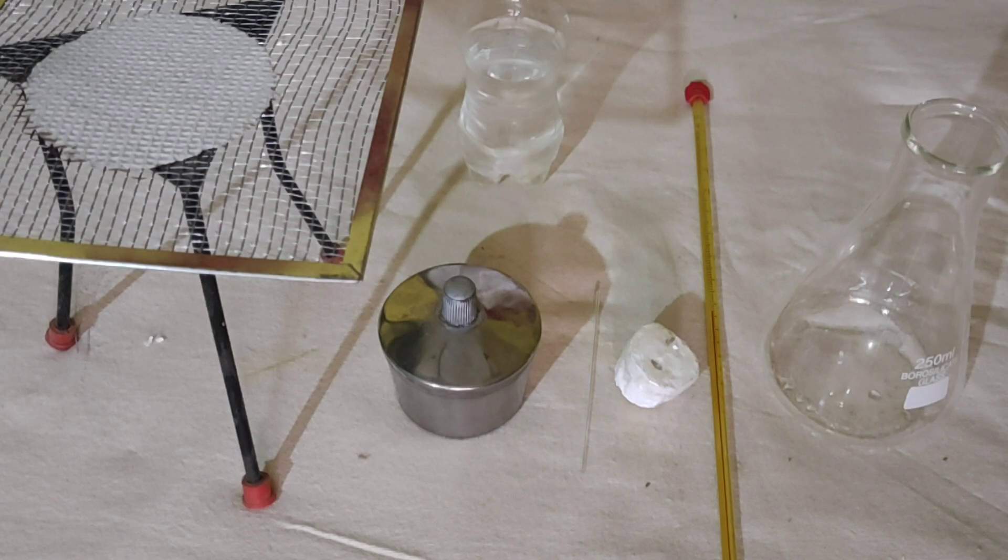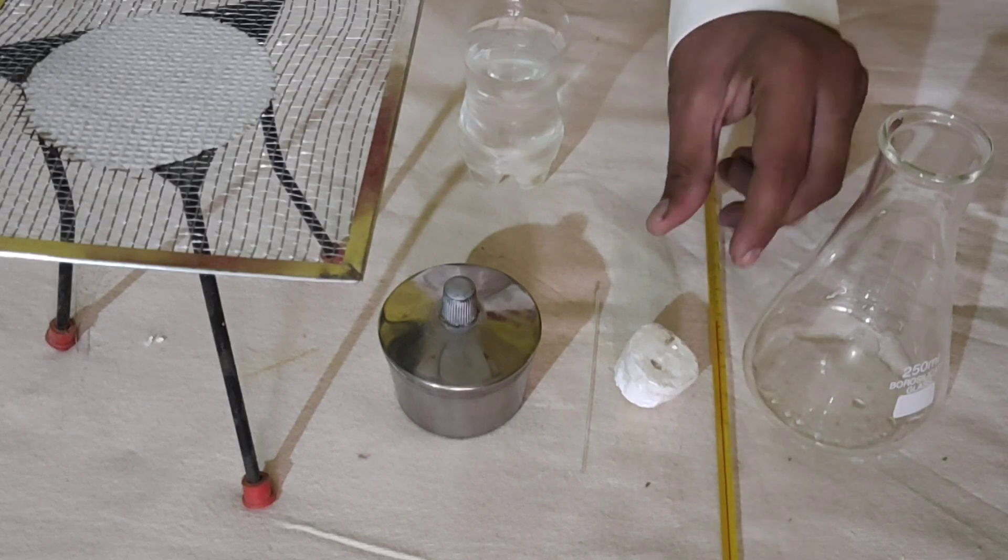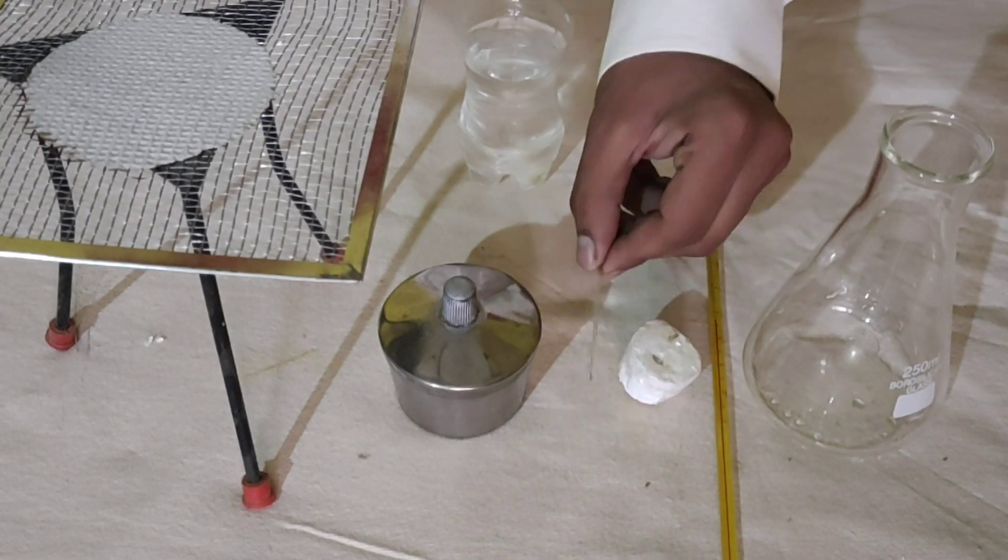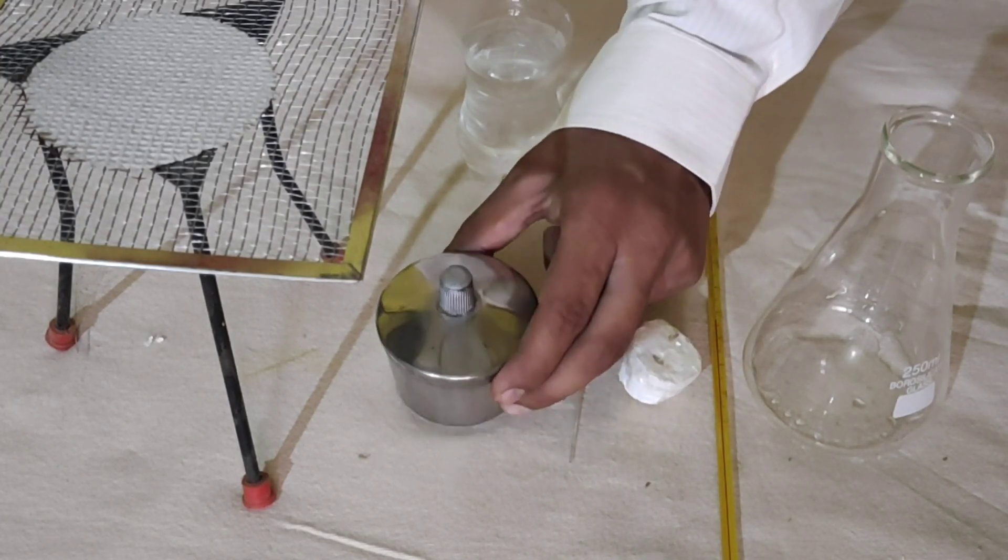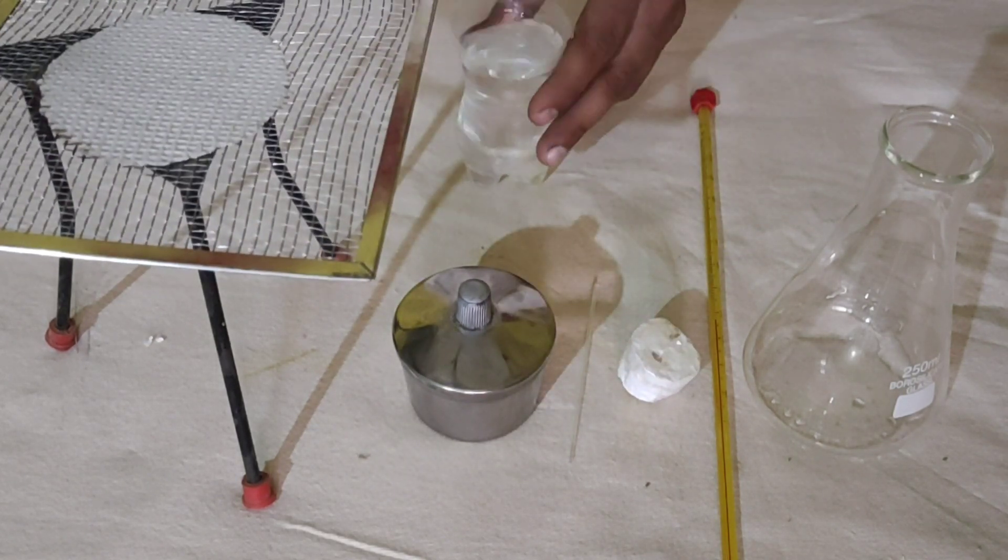For this experiment, material required: Conical Flask, Thermometer, Cork, Capillary Tube, Spirit Lamp, Tripod with Wire Gauge, and Water.